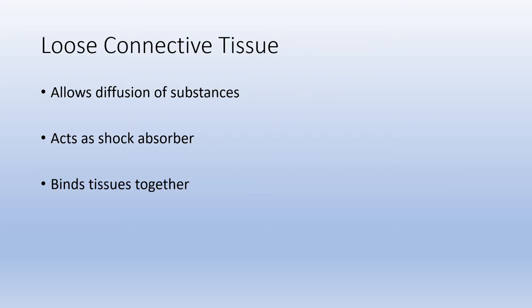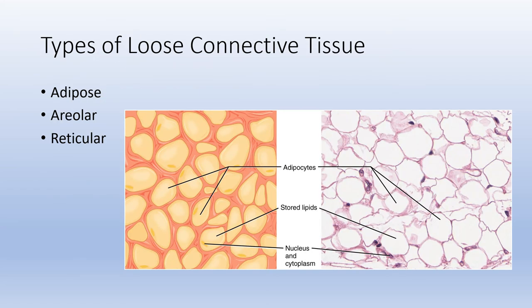Loose connective tissue allows substances to diffuse through it fairly easily because the ground substance is not tightly packed. It can act as a shock absorber and helps bind tissues together. The types of loose connective tissue include adipose, areolar, and reticular. Adipose tissue is fat tissue — the nucleus is often pushed off toward the edge of the cell.